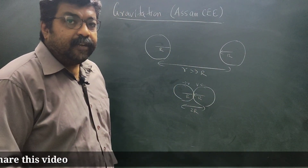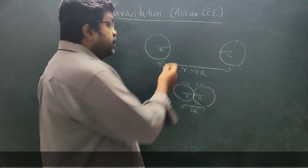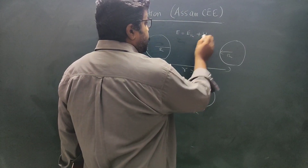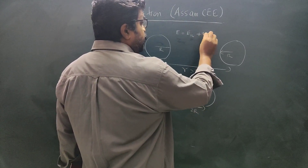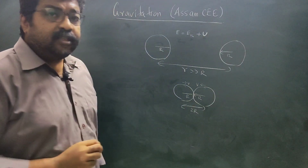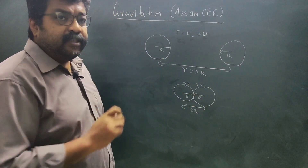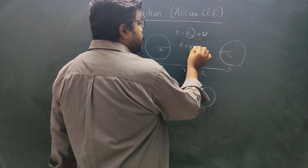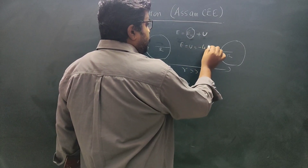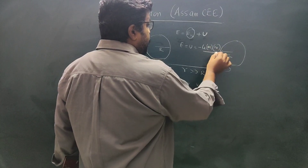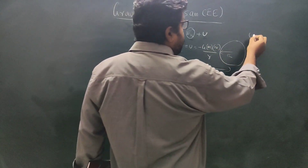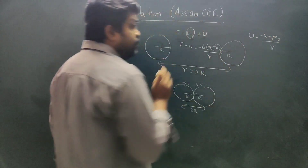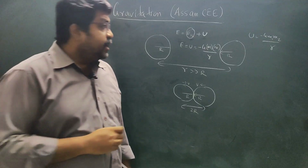The initial speed is negligible, so total energy is the sum of kinetic energy and potential energy. Since initial speed is negligible, kinetic energy is equal to zero. So total energy equals potential energy, which equals minus GM squared divided by R. The potential energy formula is U equals minus G M1 M2 divided by R, where both masses equal M and the separation is R.